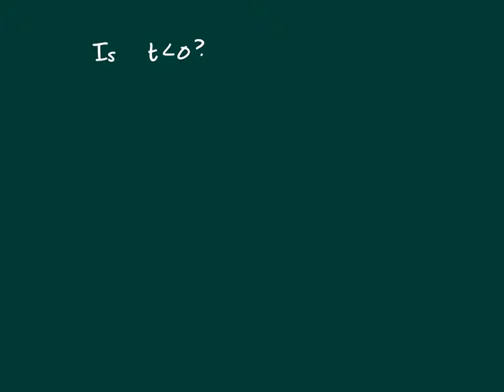We've got two points on the number line, r and t, and we're trying to figure out if t is less than 0. So let's look at clue 1. Clue 1 says negative 1 is less than r is less than 0. Well, that doesn't tell us anything about t, so that doesn't work.